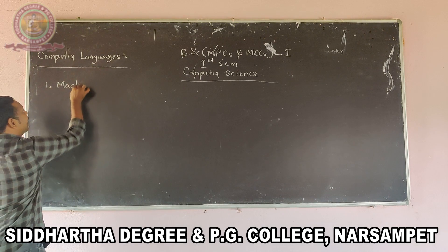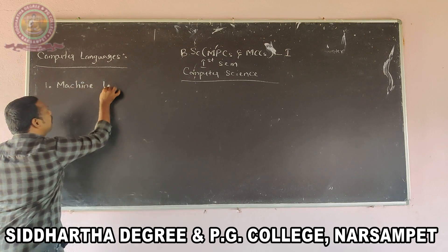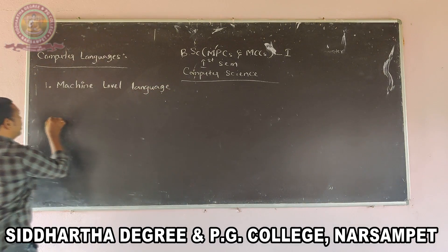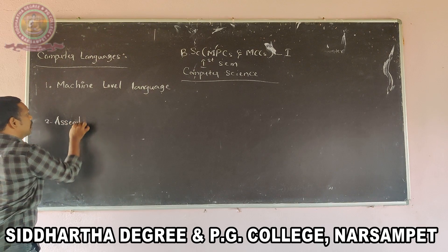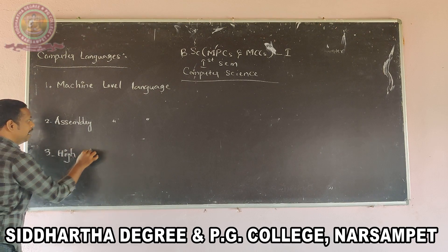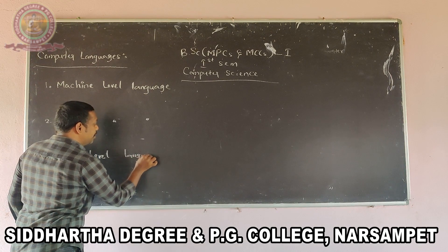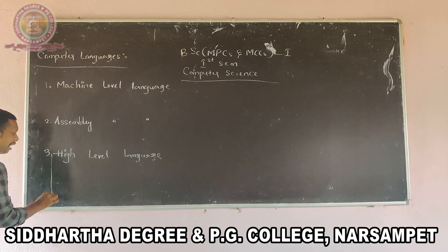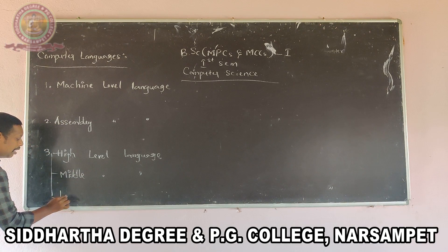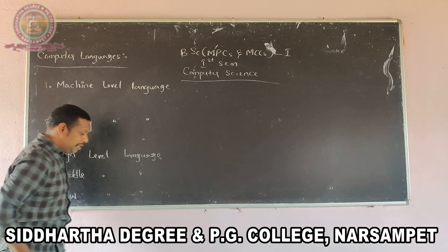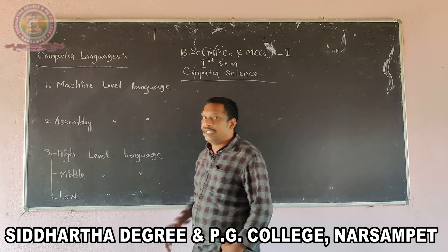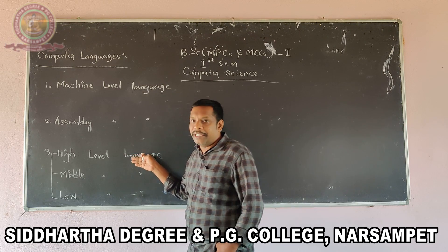Number one: machine level language. Number two: assembly level language. Number three: high level language. High level language is also divided into two types: middle level language and low level language.